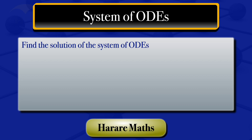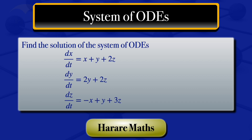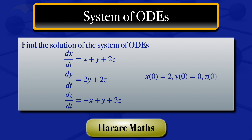In this video, I'm going to find the solution of the system of ODEs, which is these three ODEs, given the initial conditions: x(0) equals 2, y(0) equals 0, z(0) equals 1.